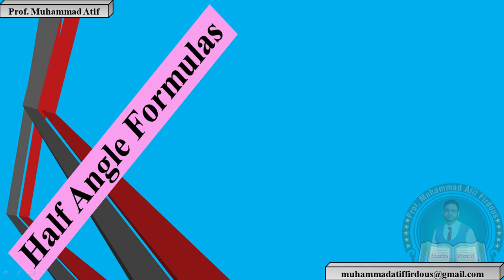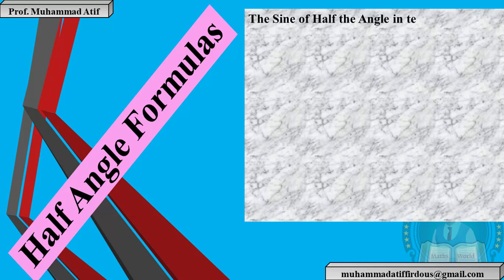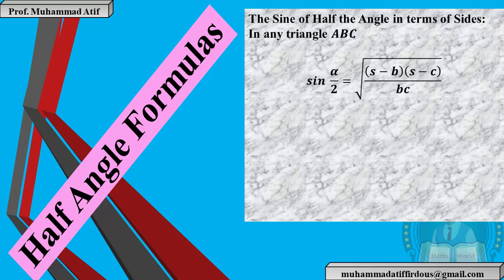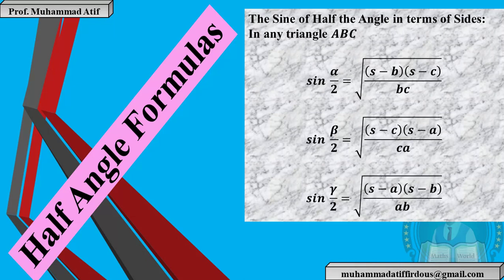Bismillah ir-Rahman ir-Rahim. Students, today we are going to prove our half angle formulas. We have already proved the sine, cosine, and tangent formulas. Today we will prove half angle formulas. The first one is the sine of the half angle formula in terms of sides. We have sine(α/2), sine(β/2), and sine(γ/2), where 2s = a + b + c.